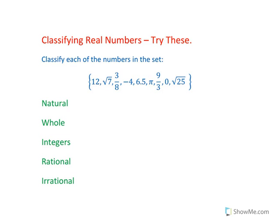So natural numbers are numbers we can count. We have 12, 9 over 3, and we have the square root of 25, which is equal to 5.